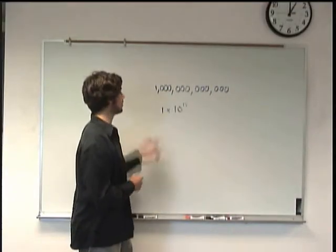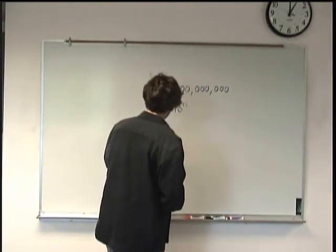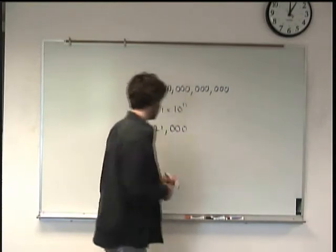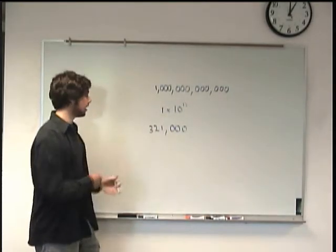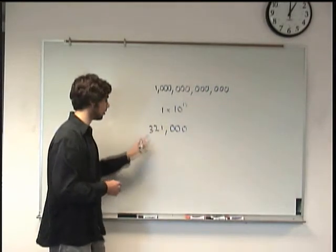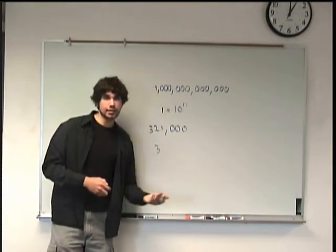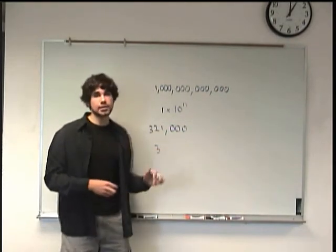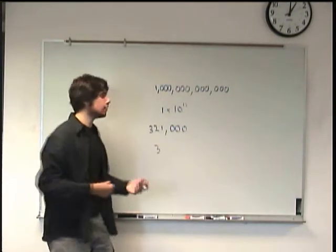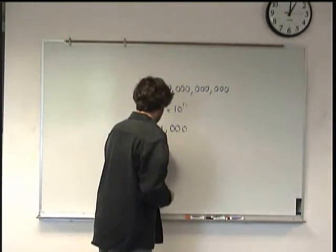Now you're probably wondering what happens if we have different non-zero numbers in the beginning. Let's say we have something like 321,000. Now the same concept applies. We want to look for the first non-zero number, in this case it's three. So we'll go ahead and write that, and if you remember from the conceptual video the first number has to be between one and ten. So in order to account for all these non-zero numbers we're going to have to go 3.21.